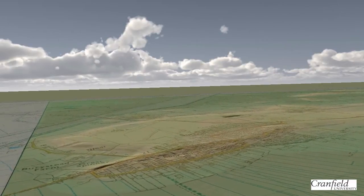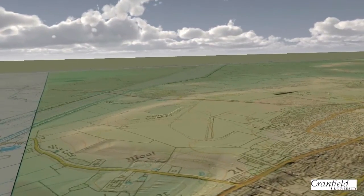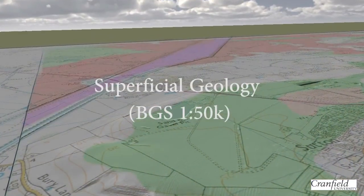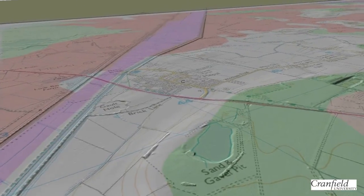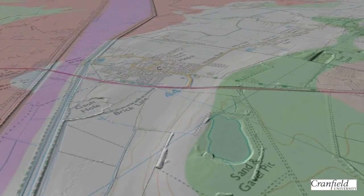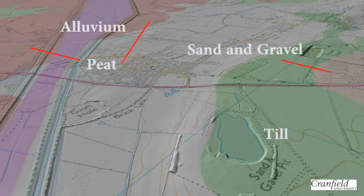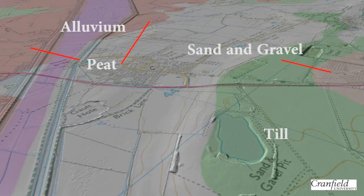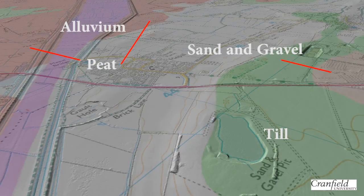Now we're heading over the area of Bury Hill, and we can now fade in the British Geological Survey's 1:50,000 scale digital geology map. The white area in the centre is representative of there being no superficial geology present in the area. We see the sand and gravel pit in the foreground, which suggests the likely superficial geology of the area. However, this does seem to be at odds with the geological mapping, which suggests that there's till in the area, and that sand and gravel is more to the centre right of the screen.